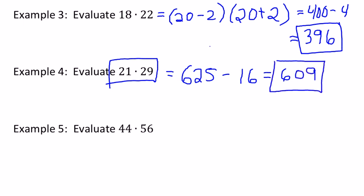So 21 times 29 equals 609. Now you can really start to see why difference of squares can be so useful because we were able to pretty much in our head with a little bit of computation writing down, but we could have probably done 625 minus 16 in our head and got 609.